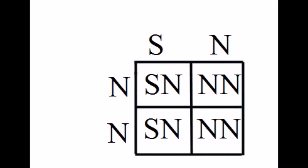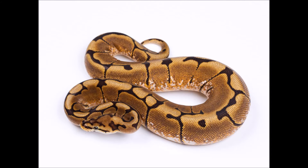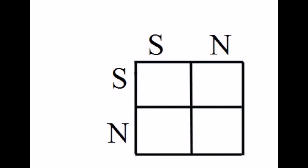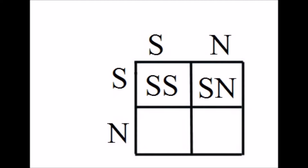Now let's say we want to breed two spider ball pythons together. Our genotypes are going to be identical. We can put them on our Punnett square and carry it across. On the top we have SS and Sn.